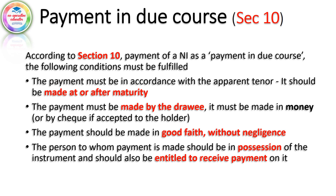Payment in Due Course is defined in section 10 of the Negotiable Instrument Act 1881. In section 10, the payment in due course defines a payment. Now, if you have a check issue, it is a check issue. If you have a bank, it is a drawee bank. Payment in due course will satisfy 4 conditions. In section 10, the payment must be in accordance with the apparent tenor, and the apparent tenor must be in accordance with the payment.